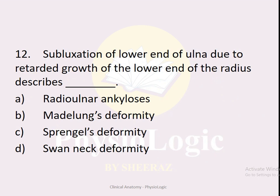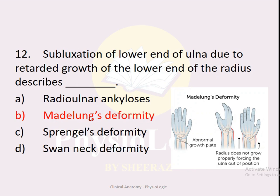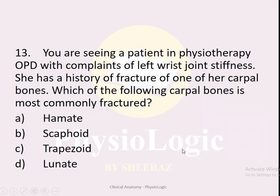MCQ number twelve: Subluxation of the lower end of ulna due to retarded growth of the lower end of radius describes which condition? Options: A — radial ankylosis, B — Madelung's deformity, C — Sprengel's deformity, D — swan neck deformity. The correct option is B — Madelung's deformity, which results from retarded growth of the lower end of the radius and causes subluxation of the ulna.